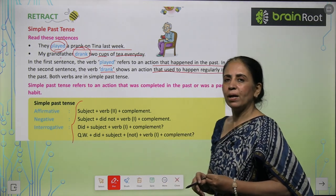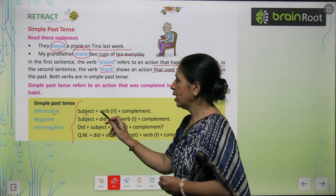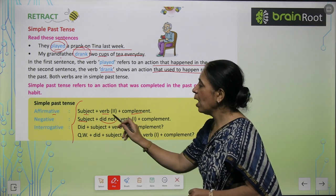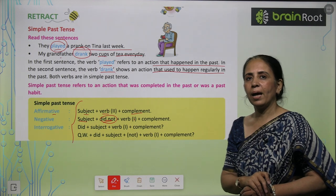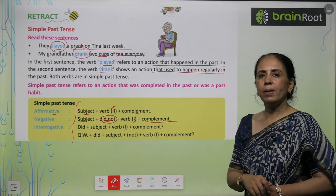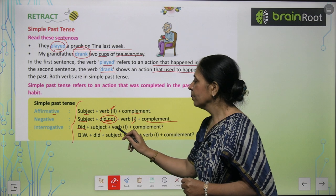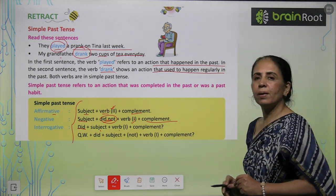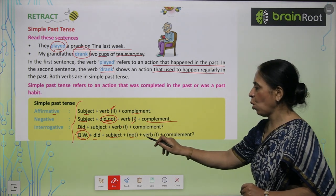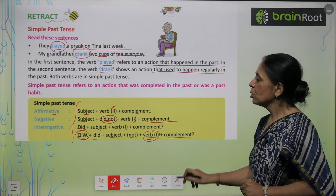Now let's look at the pattern of formation for simple past tense. For affirmative: Subject + Verb (past form) + Complement. For negative: Subject + did not + Verb (first form) + Complement — the second form of the verb converts back to first form. For interrogative: Did + Subject + Verb (first form) + Complement. For negative question: Question word + did + Subject + not + Verb (first form) + Complement.